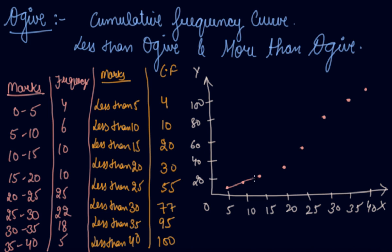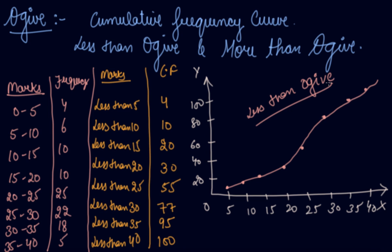Your more than Ogive goes in an upward direction, while this is your less than Ogive. If you are asked to form the less than Ogive, you will convert the class intervals into less than — less than 5, less than 10, less than 15, less than 20 — and then keep adding to find the cumulative frequency: 4 plus 6 is 10, plus 10 is 20, plus 10 is 30, plus 25 is 55, plus 22 is 77, plus 18 is 95, plus 5 is 100.